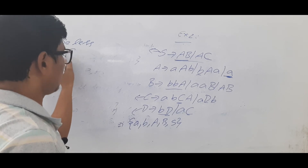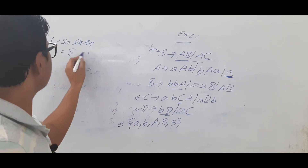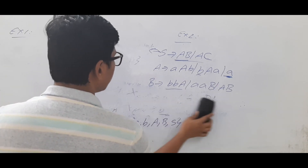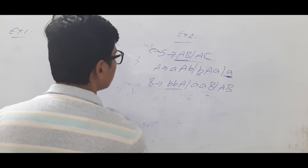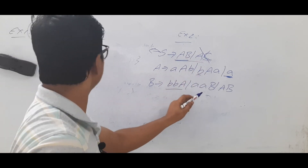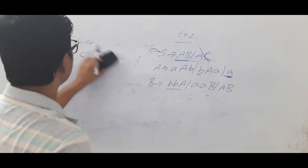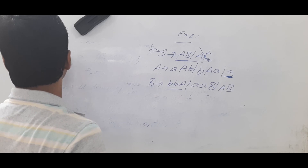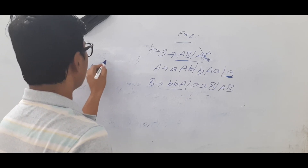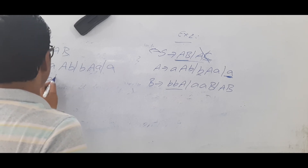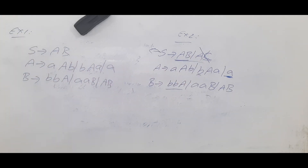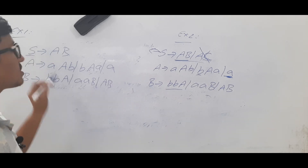The useful symbols are: terminals 'a', 'b', variable A, variable B, and S. The useless symbols are C and D. We eliminate all productions related to C and D. Anywhere C appears in a production we eliminate that production too. After completing phase one, the remaining grammar is: S → AB | BA, A → a | AB | BA | a, and B → b | BA | AB | b.